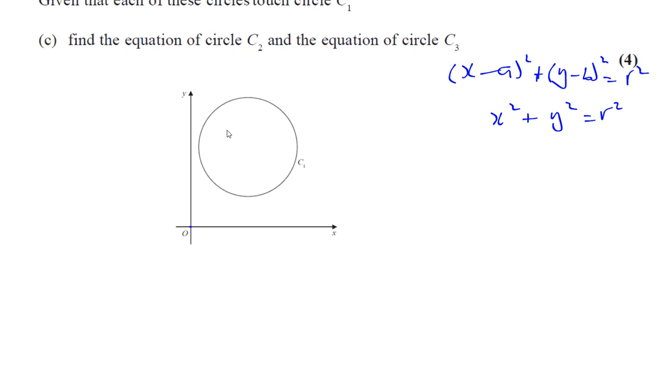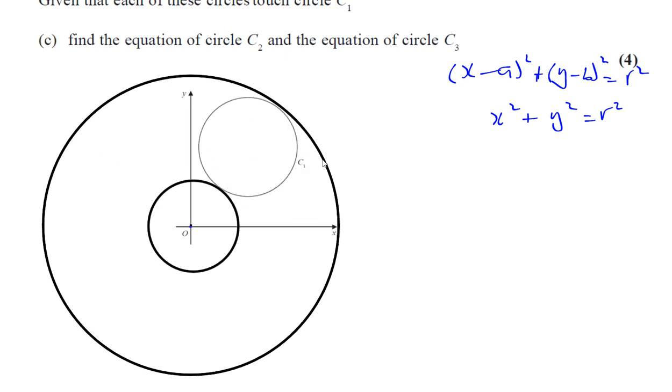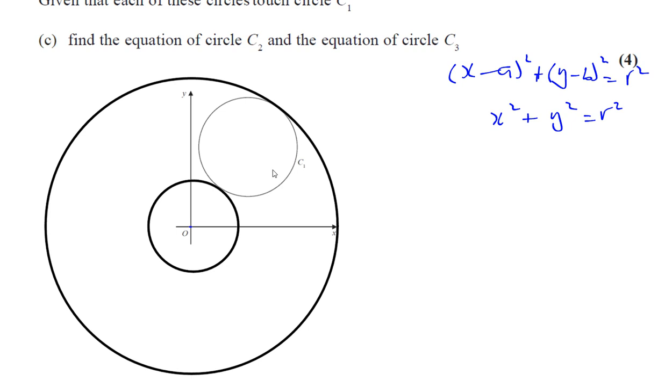Now we know that each of the circles touch C1. So let's draw a circle with center (0, 0) touching C1 here. And the other one also touches C1. This has the same center, so it must touch it from the other side. It just touches it, it doesn't cut through it. So those are circle C2 and C3.